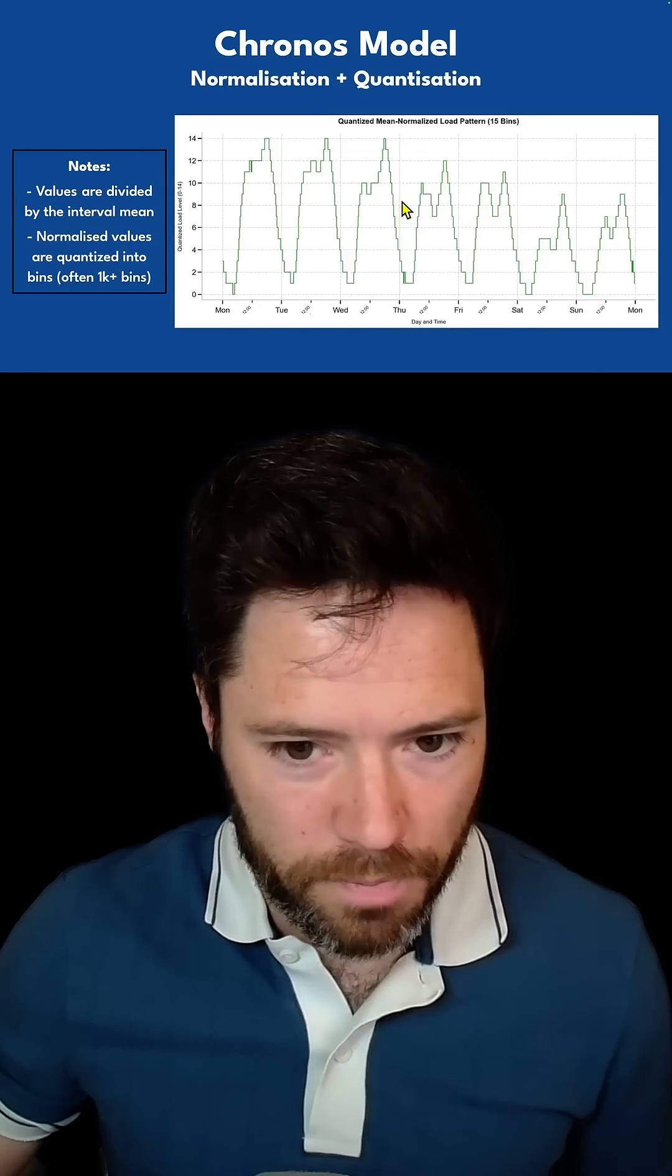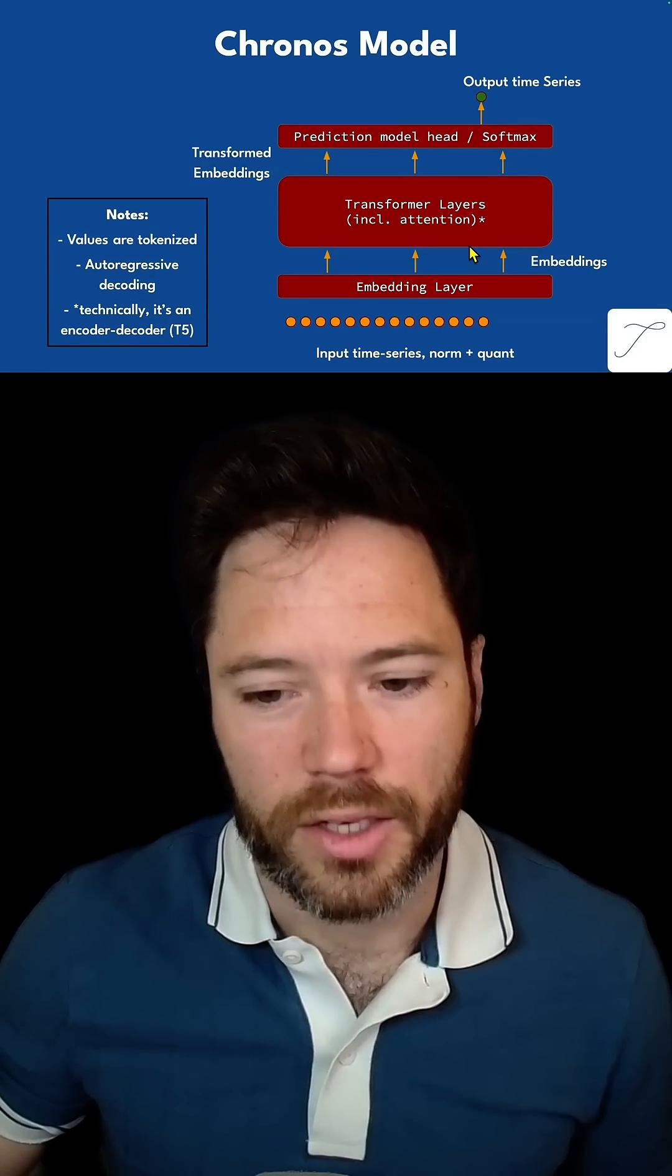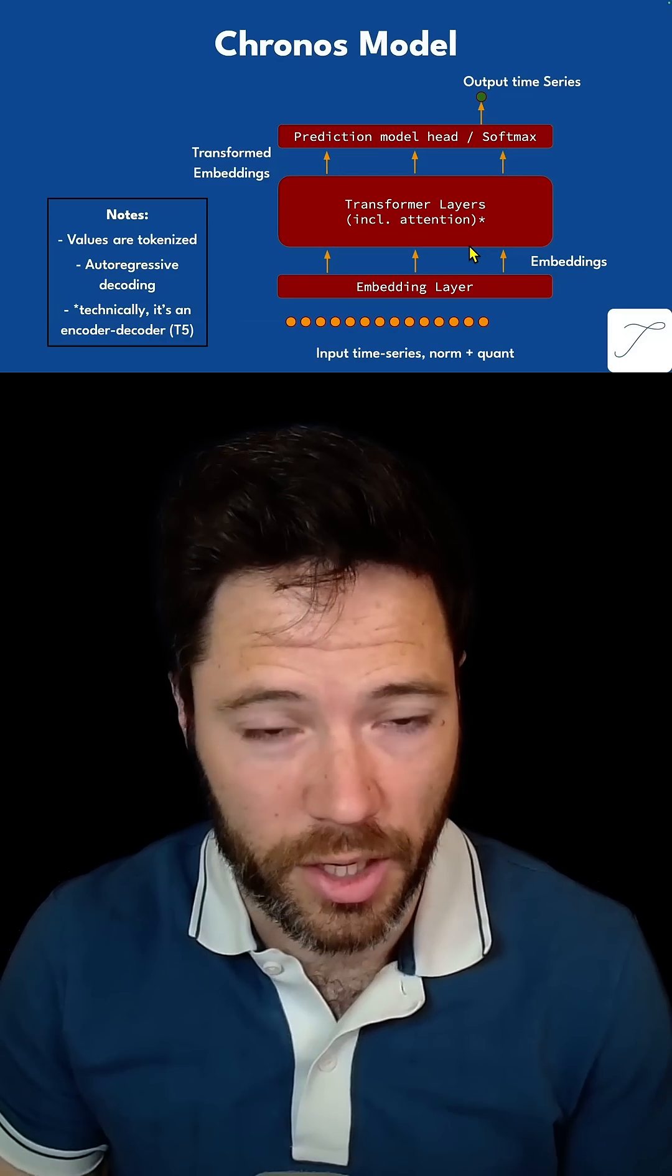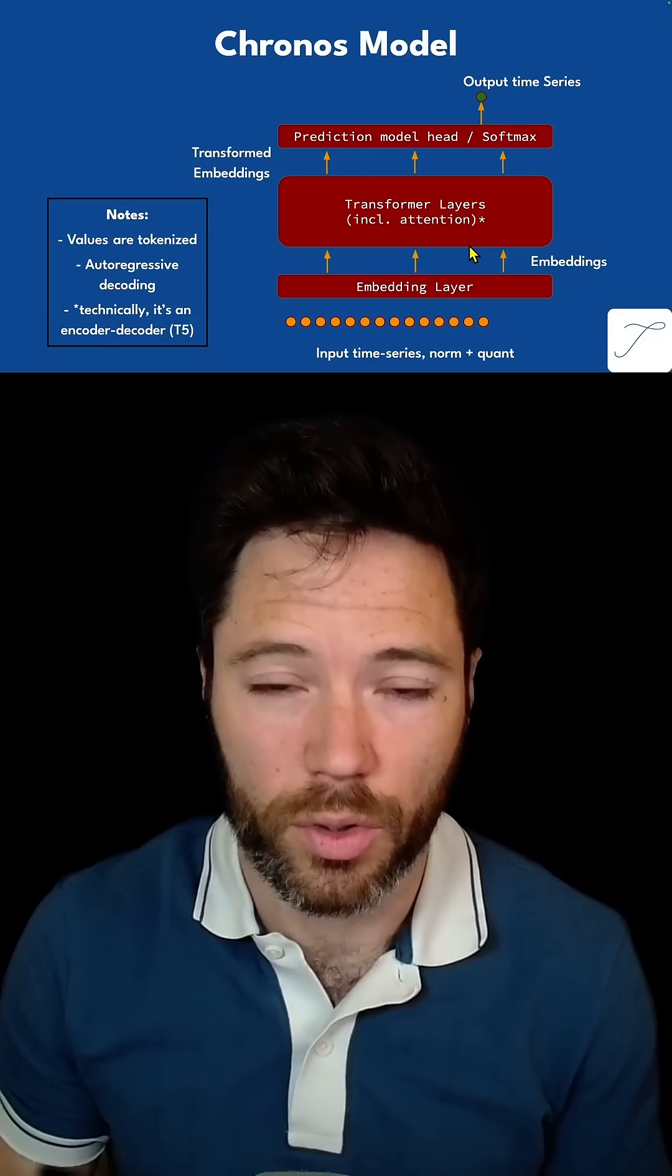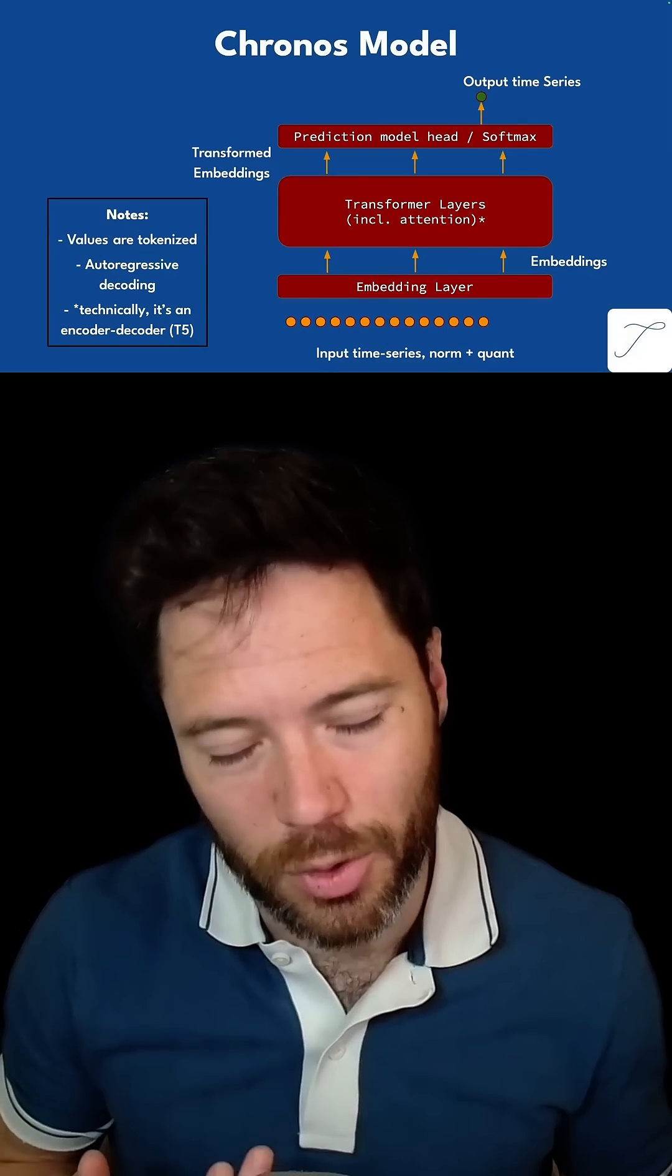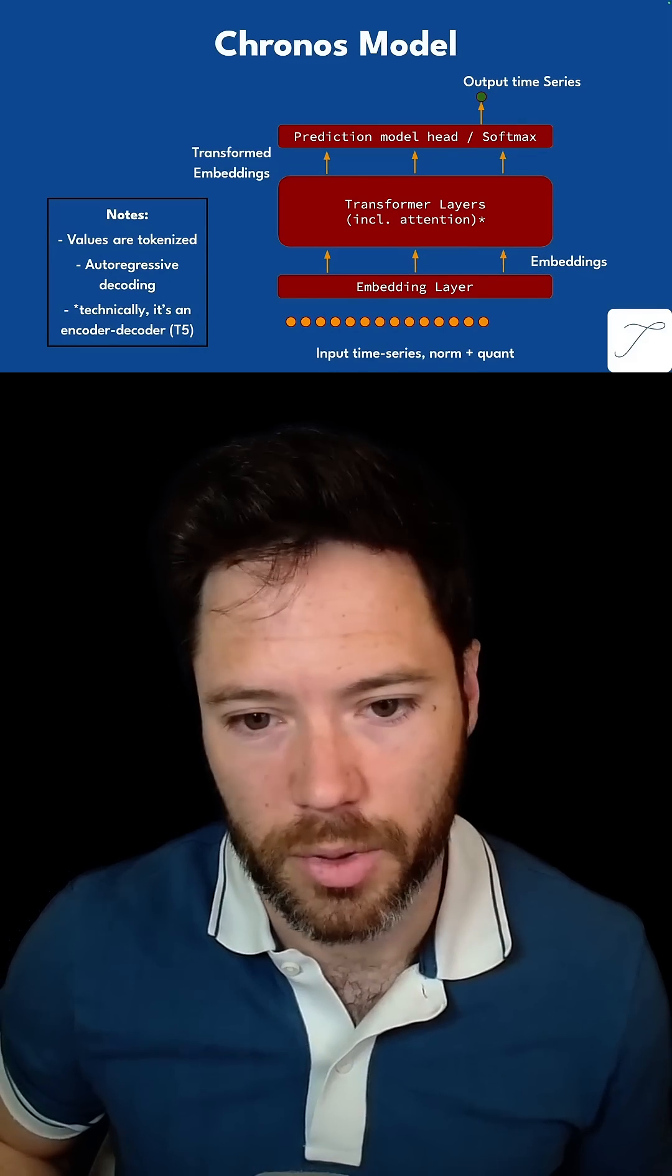Now let's move to the Chronos model. Before I describe the architecture, I want to talk about normalization and quantization, because Chronos uses tokens, and to get tokens you need to quantize the input numbers.